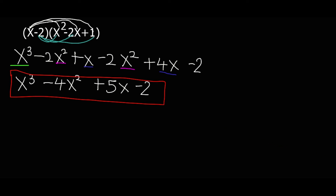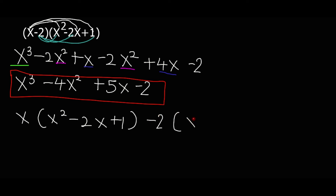We can also use the second method — we can write it out the same way, multiplying everything by (x squared minus 2x plus 1) to create the same result.